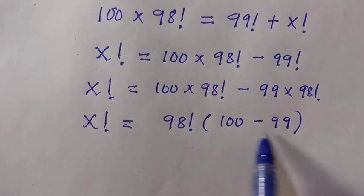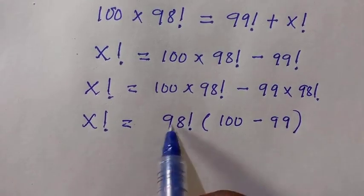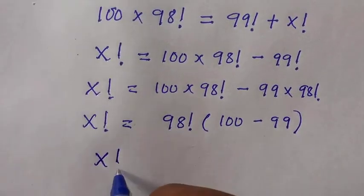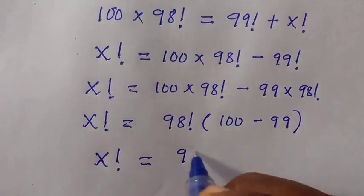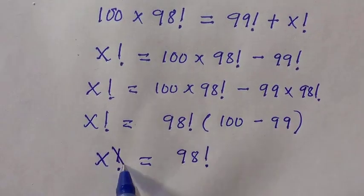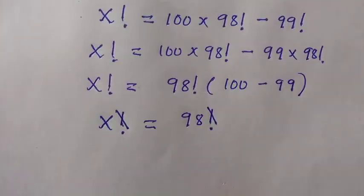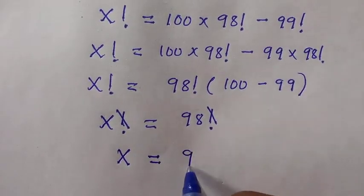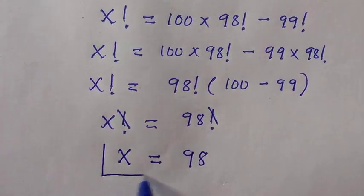100 minus 99 equals 1 and 1 multiplied by 98 factorial is 98 factorial. So we have x factorial equals 98 factorial. Therefore, the value of x here equals 98.